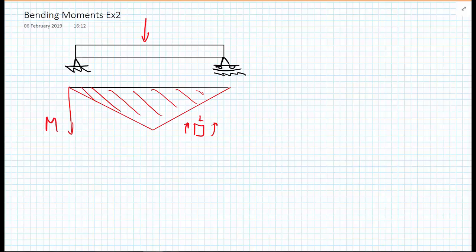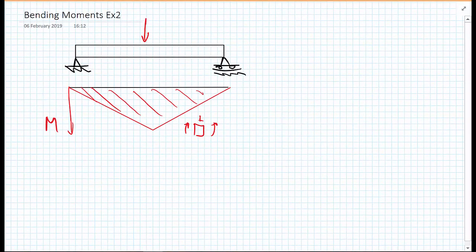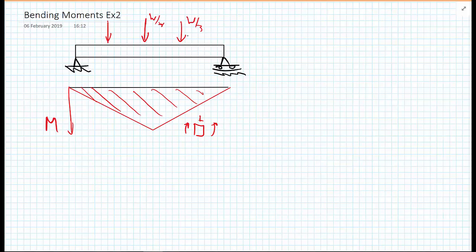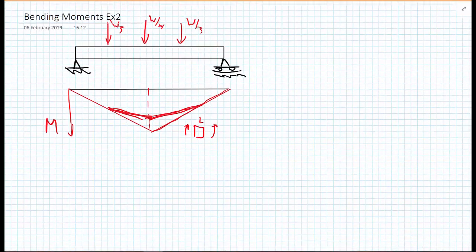In the following tutorial we considered the same beam but with more loads: instead of W, we had W/3 plus W/3 plus W/3. We found that the bending moment changed — specifically how steep it was — as the loads were introduced along the linear sections, resulting in a reduction in the gradient.